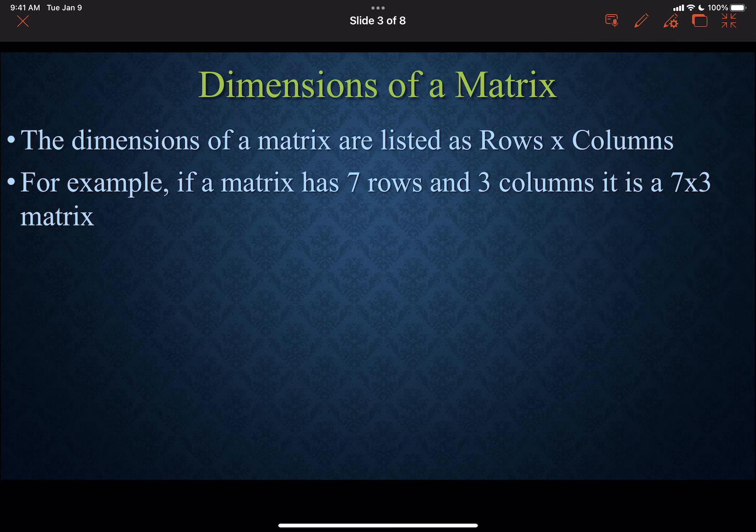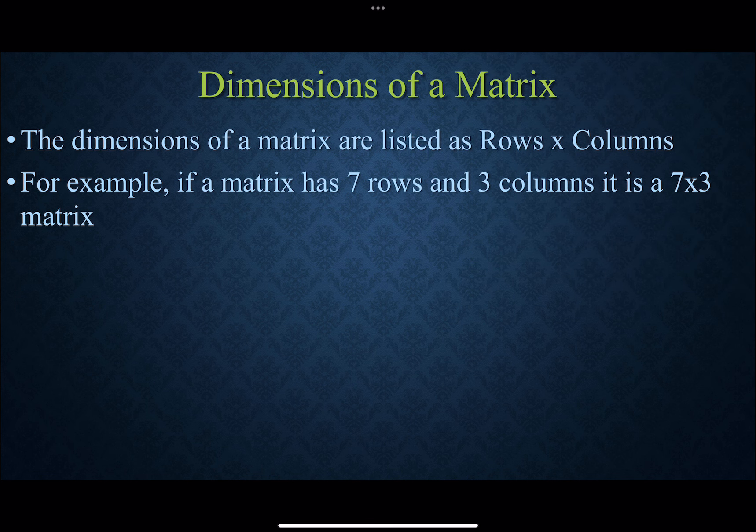Now the dimensions of a matrix is going to be based off the number of rows and columns. So if a matrix has 7 rows and 3 columns, it's called a 7 by 3 matrix.